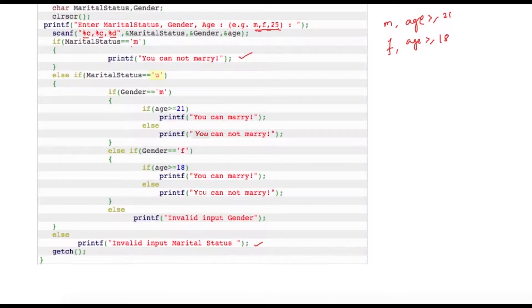Now suppose his marital status is U, that is unmarried. Then I'm going to check whether he's a male or female. Assuming the user is male, then the next condition is to check his age. So suppose his age is greater than 21, we can tell him that he can marry, else he cannot because he's not yet 21 years old.